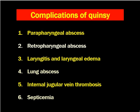Complications of Quincy include parapharyngeal space abscess when infection spreads laterally, and retropharyngeal space abscess when it spreads posteriorly and medially. The patient might also develop laryngitis and laryngeal edema as a descending infection. Lung abscess can occur if the abscess ruptures and spreads to the lungs, though this is uncommon. Occasionally, internal jugular vein thrombosis may occur, and the patient might develop septicemia. Rarely, the patient may die due to upper airway obstruction at the level of the oropharynx.